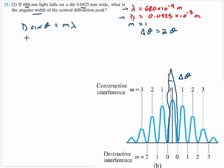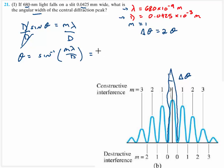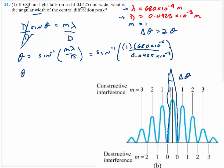I'm looking for theta 1, so divide both sides by d and take the arc sine of both sides. The angle is going to be equal to the inverse sine of m lambda divided by d. Inverse sine with m equal to 1, wavelength 680 times 10 to the negative ninth meters, divided by 0.0425 times 10 to the minus 3. I get an angle equal to 0.9168 degrees. The angular width is 2 times that, so it's going to be 1.834 degrees.